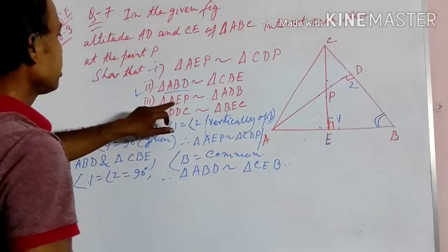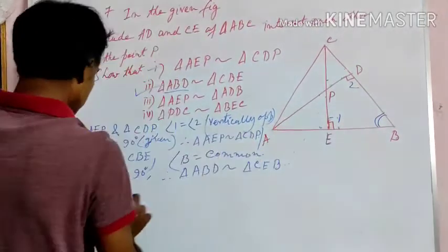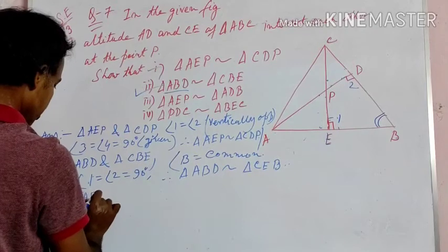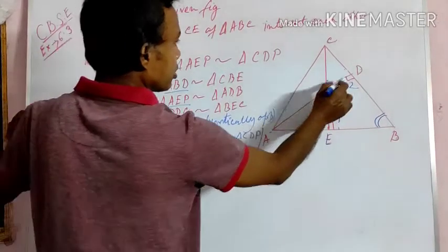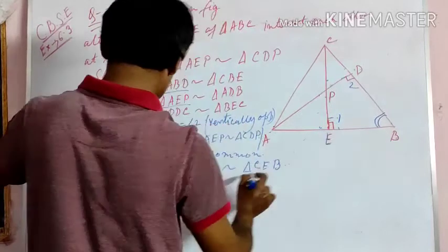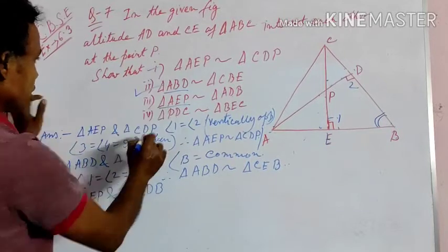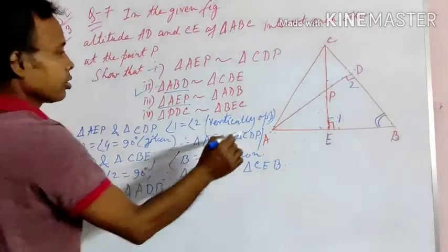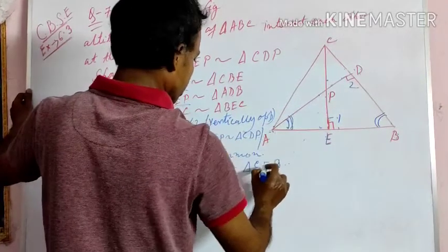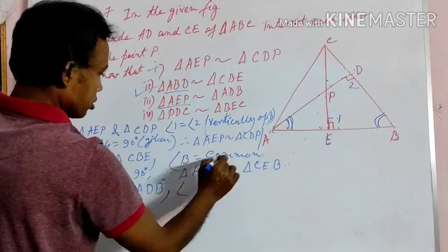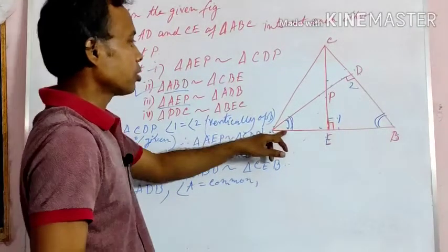For question 3, in triangle AEP and triangle ADB, angle A is a common angle for both triangles.